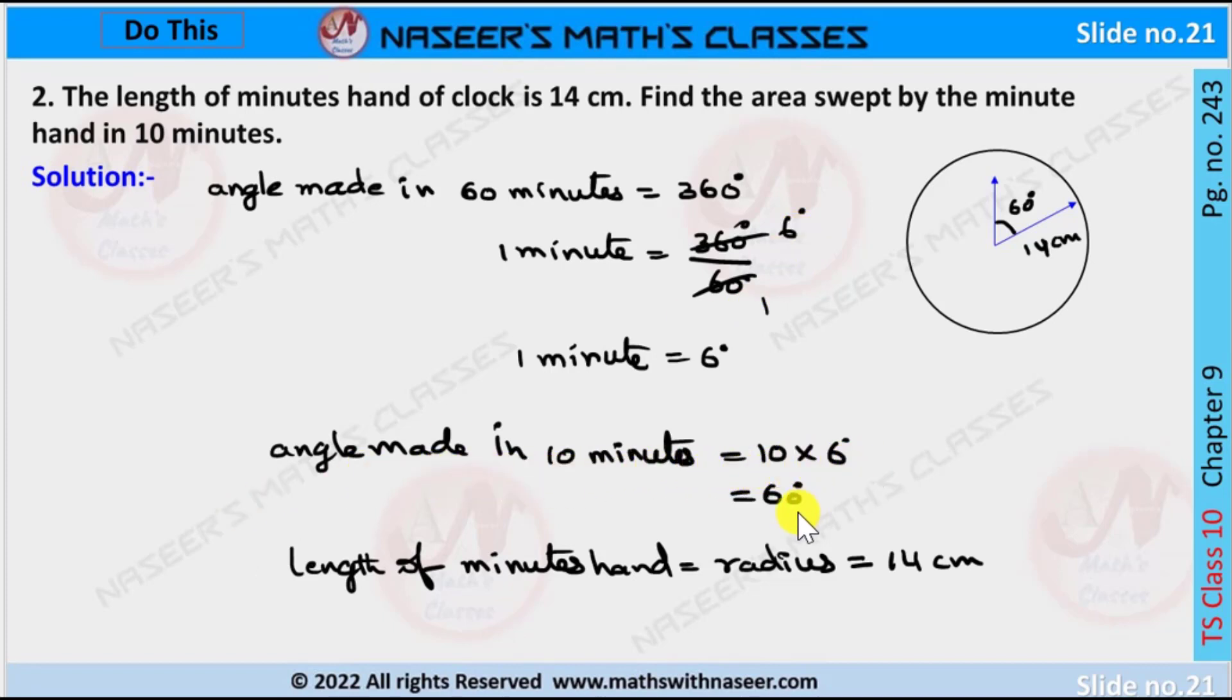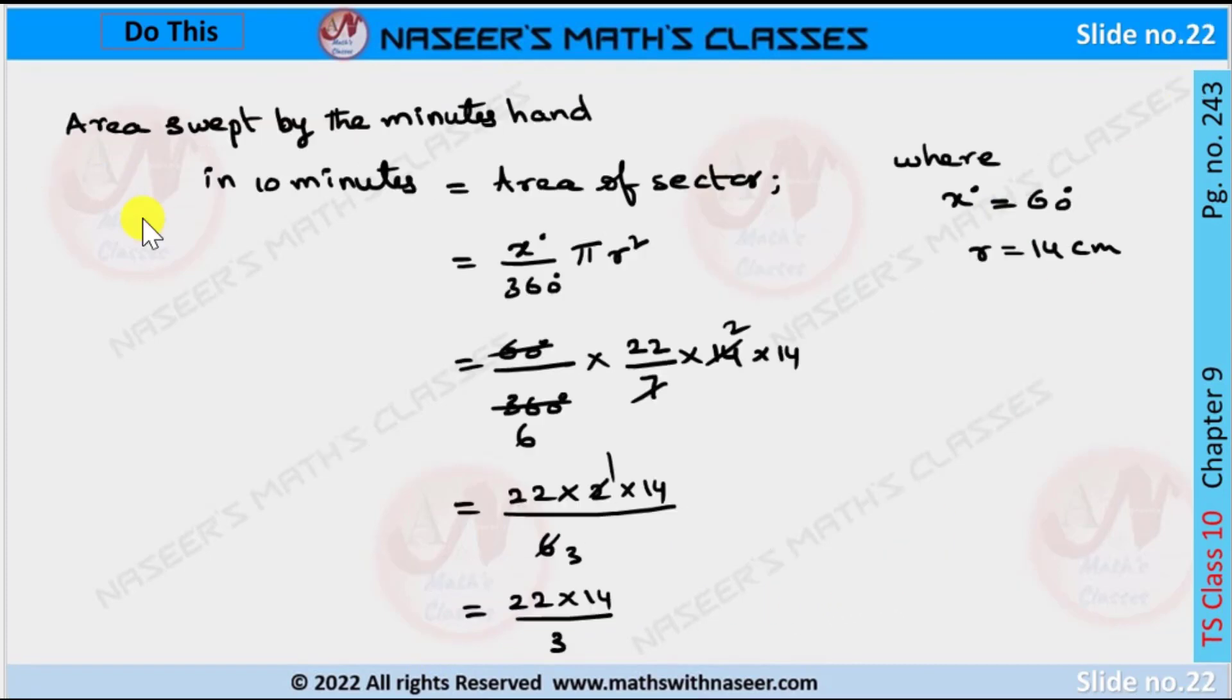Length of the minute hand is nothing but radius, which is equal to 14 centimeters. Area swept by minute hand in 10 minutes is equal to area of a sector.